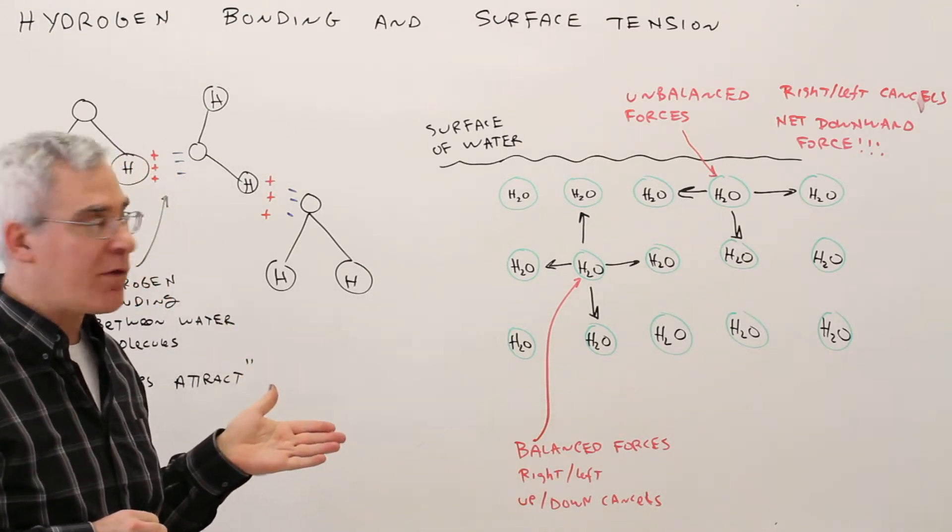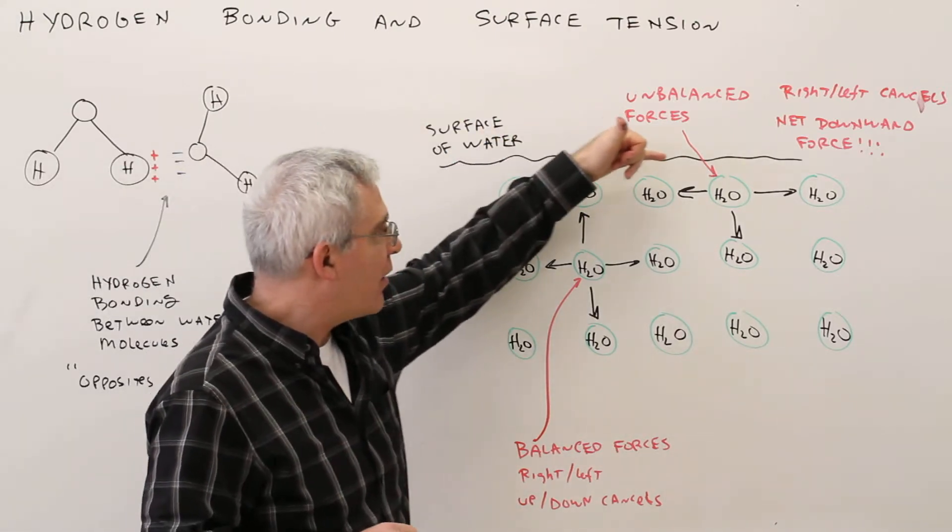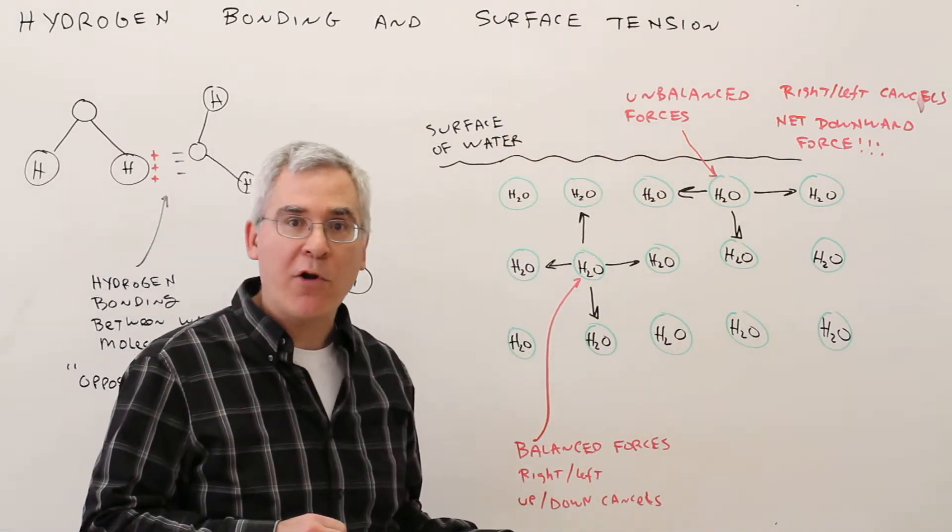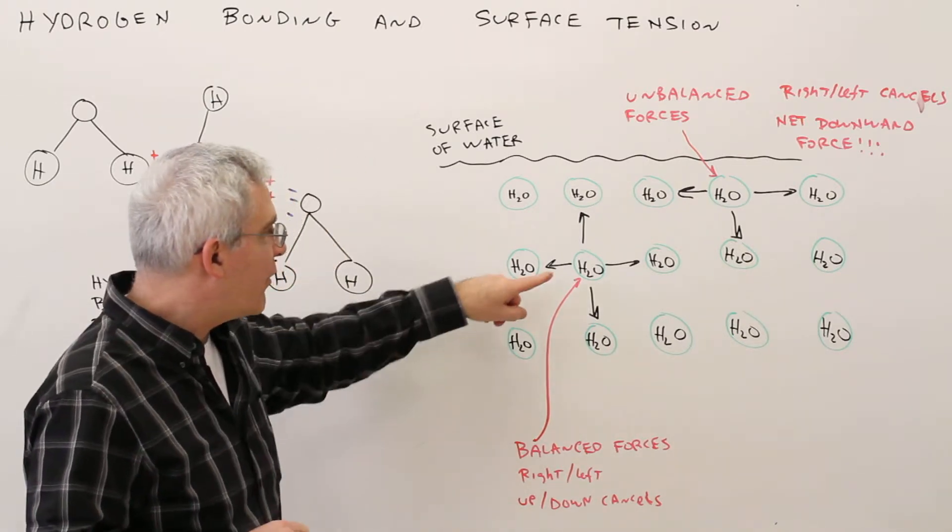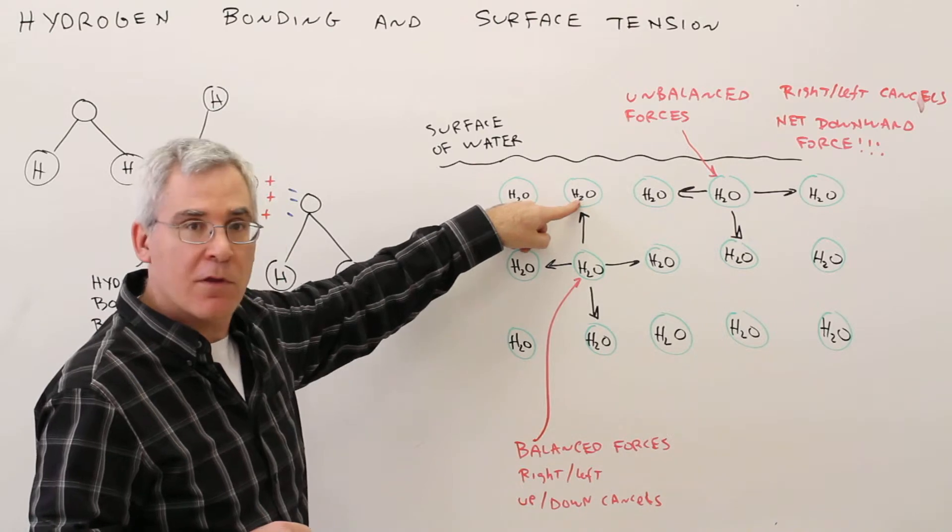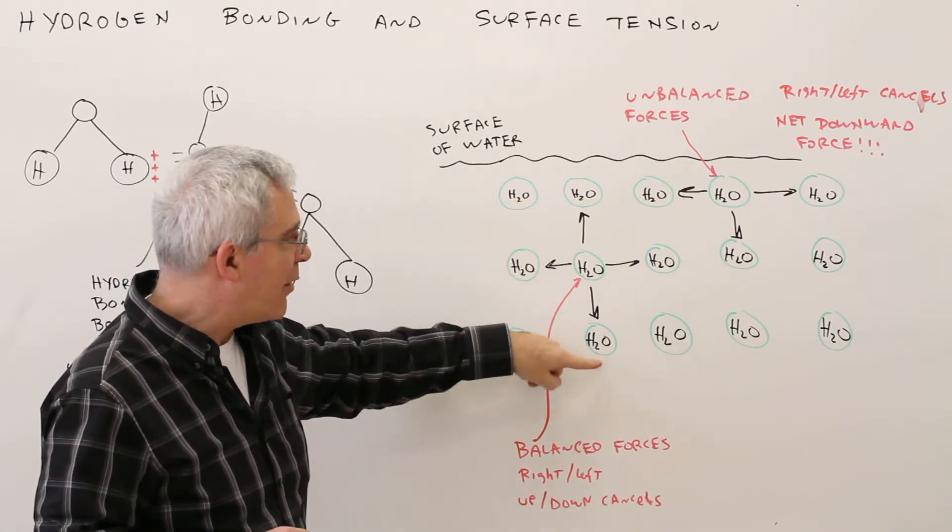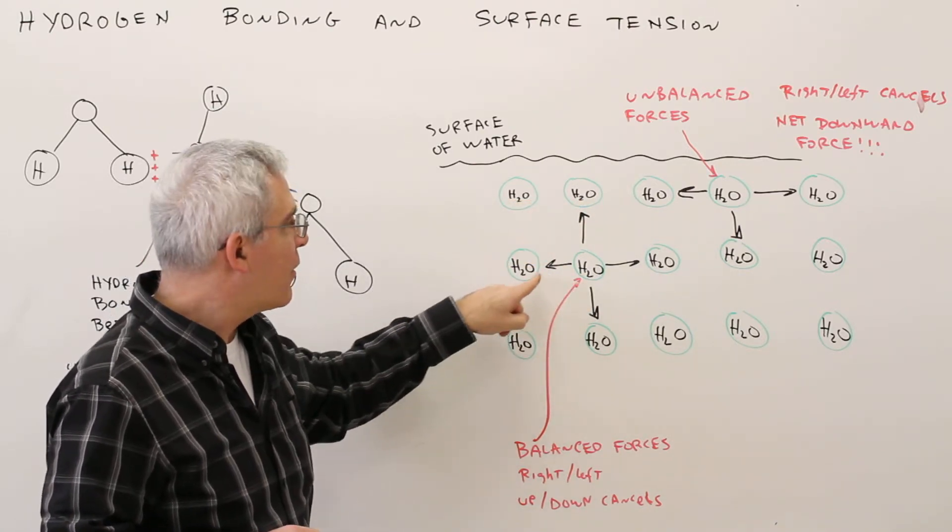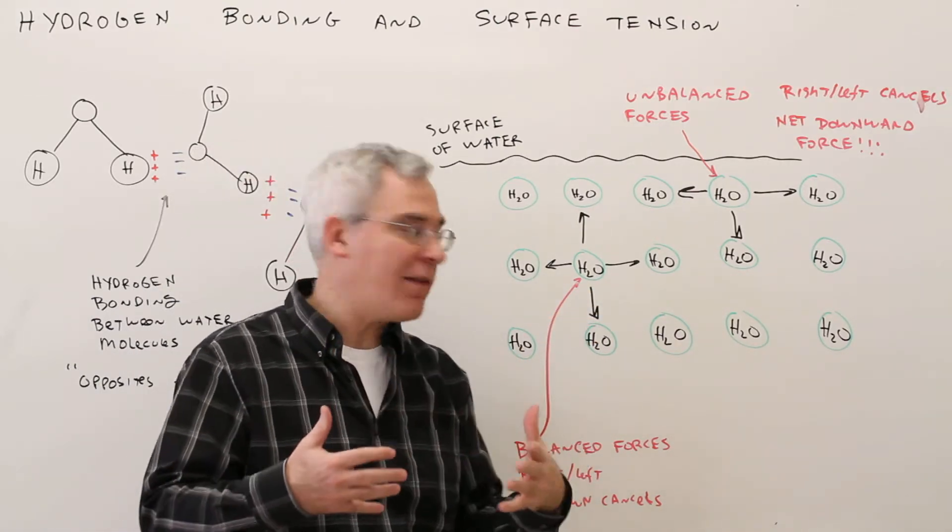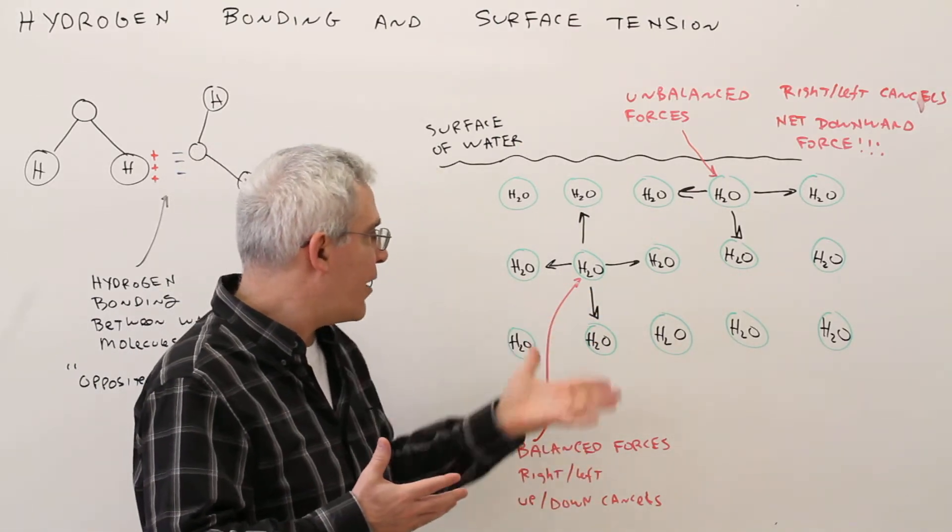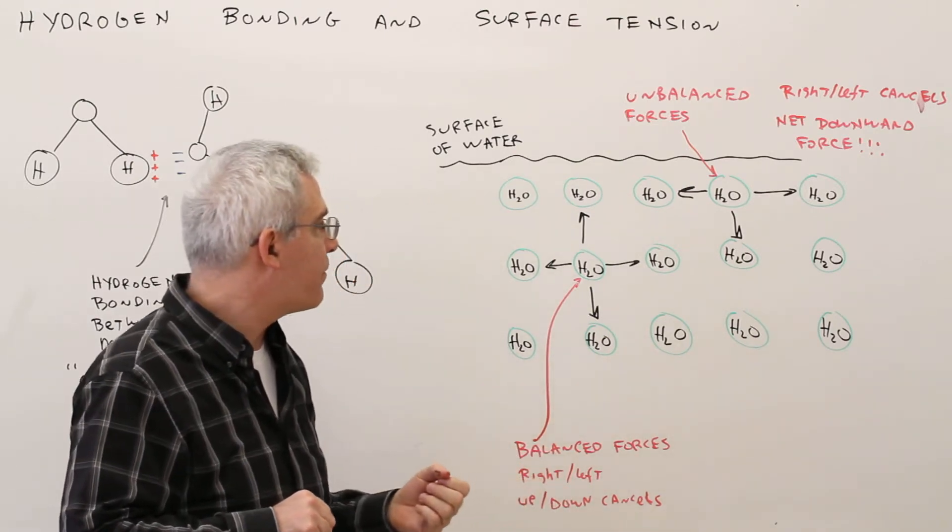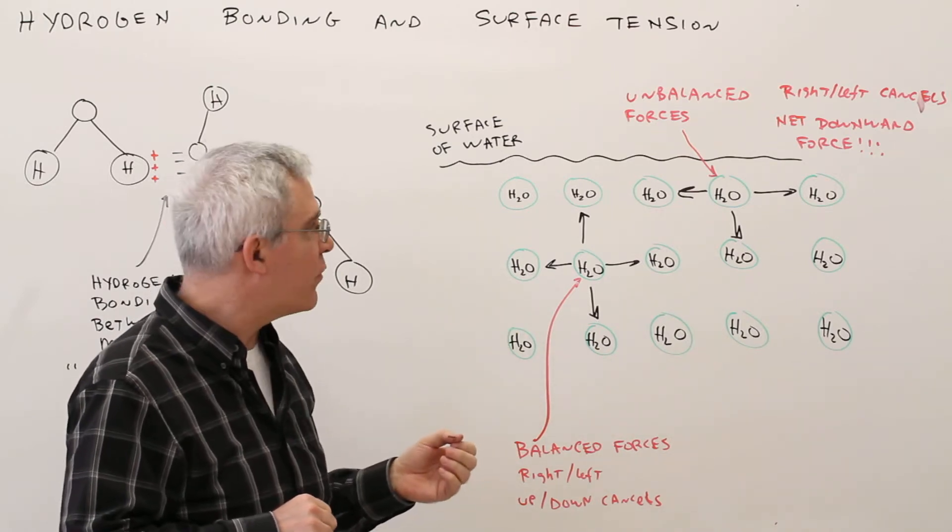Now to talk about surface tension, let's say that we've got a surface of water here with all of these different water molecules. We'll talk about this water molecule here. He's attracted upwards to the one above him, downwards to the one below him, to the left and to the right, and all four forces tend to cancel out and it's basically a balanced force situation. So he's free to move however the water molecule chooses.